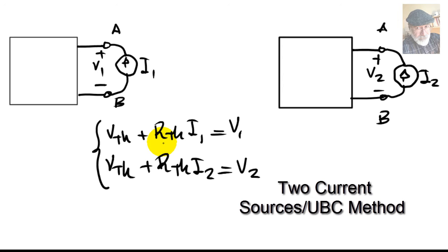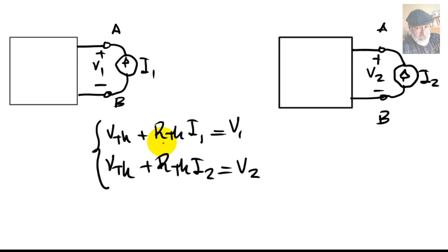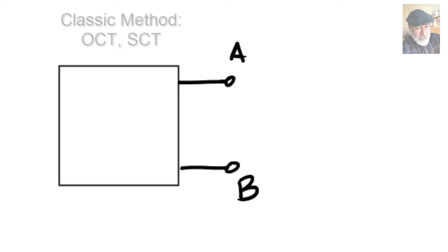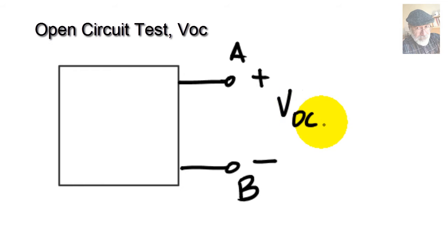But there was also another method, the classic method. In the classic method, we would not connect anything at the port first, and just compute what was the voltage that appeared there on that port, and we call that the open circuit voltage, VOC.